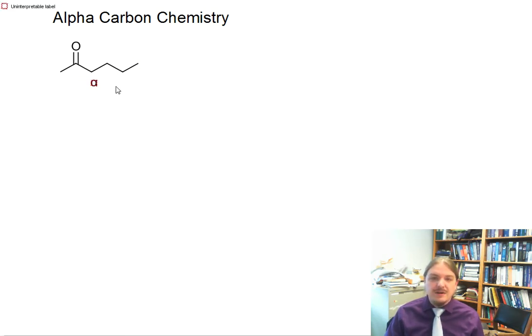We label the carbon atoms with their position relative to the carbonyl group. So you have the carbonyl carbon, the alpha carbon, the beta carbon, the gamma carbon, the delta carbon. You can imagine epsilon, etc.